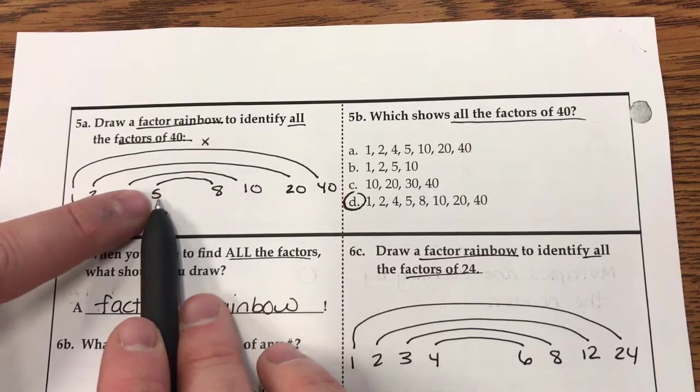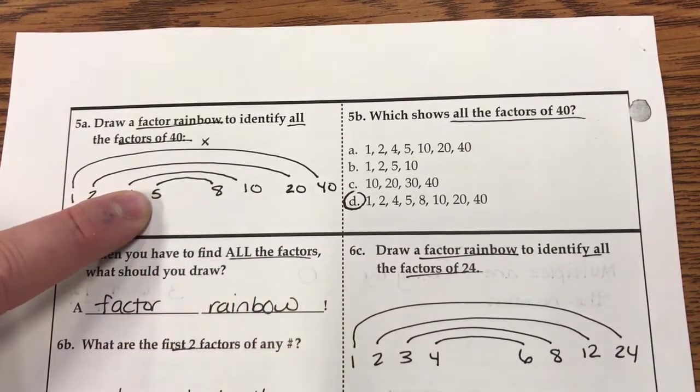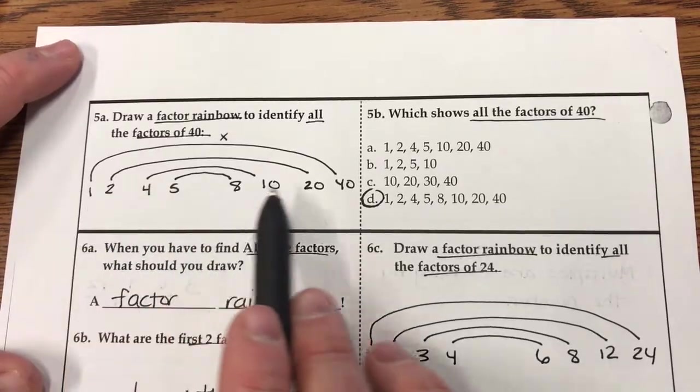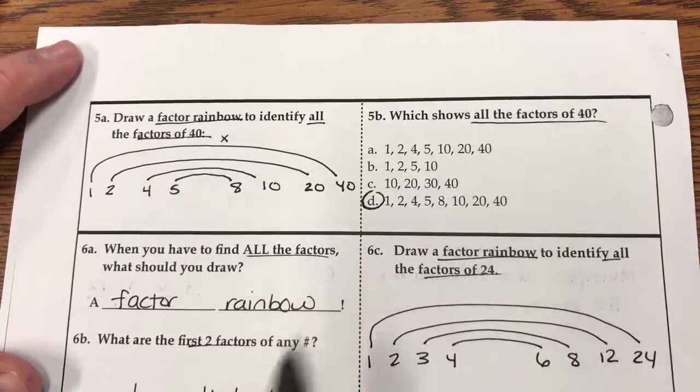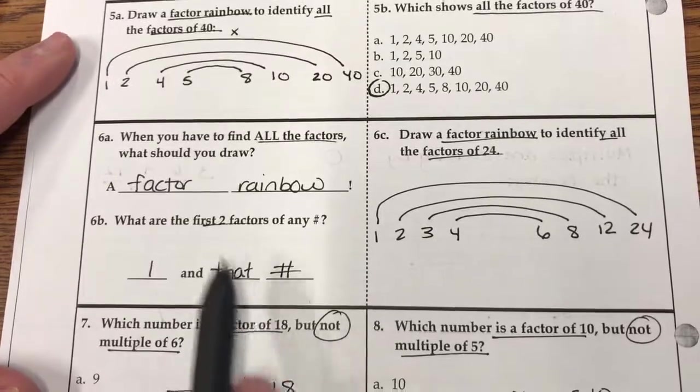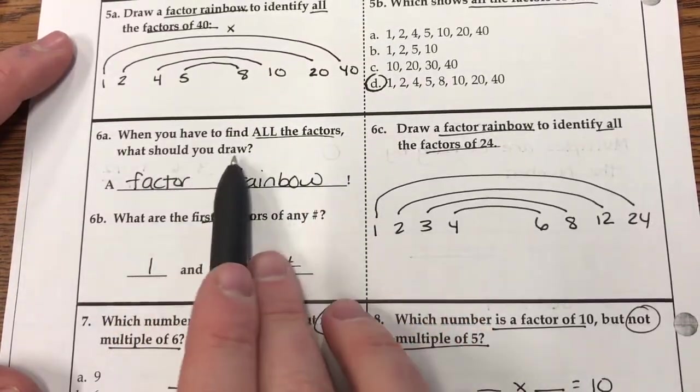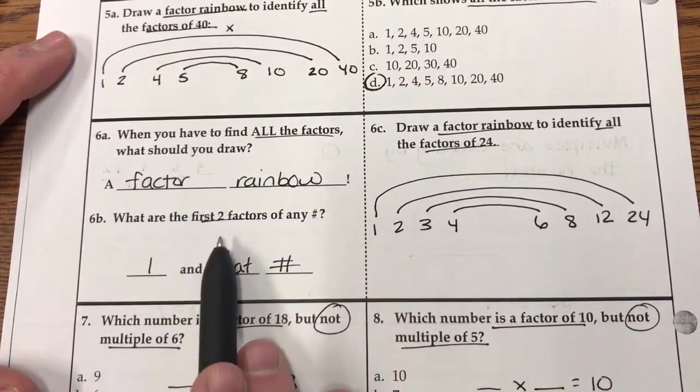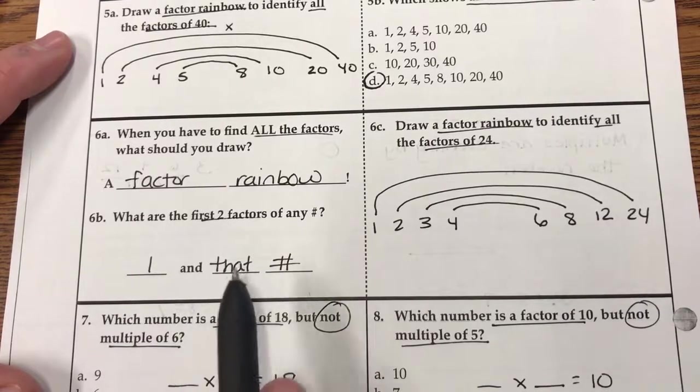So when I did 40 divided by 3, it didn't work. Then I tested 4. Then I tested 5. And when I tested 6, I got a decimal. Okay? So I did it here and then found the matching factors over there. When you have to find all the factors, what should you draw? A factor rainbow. What are the first two factors? Here's 1 and that number.